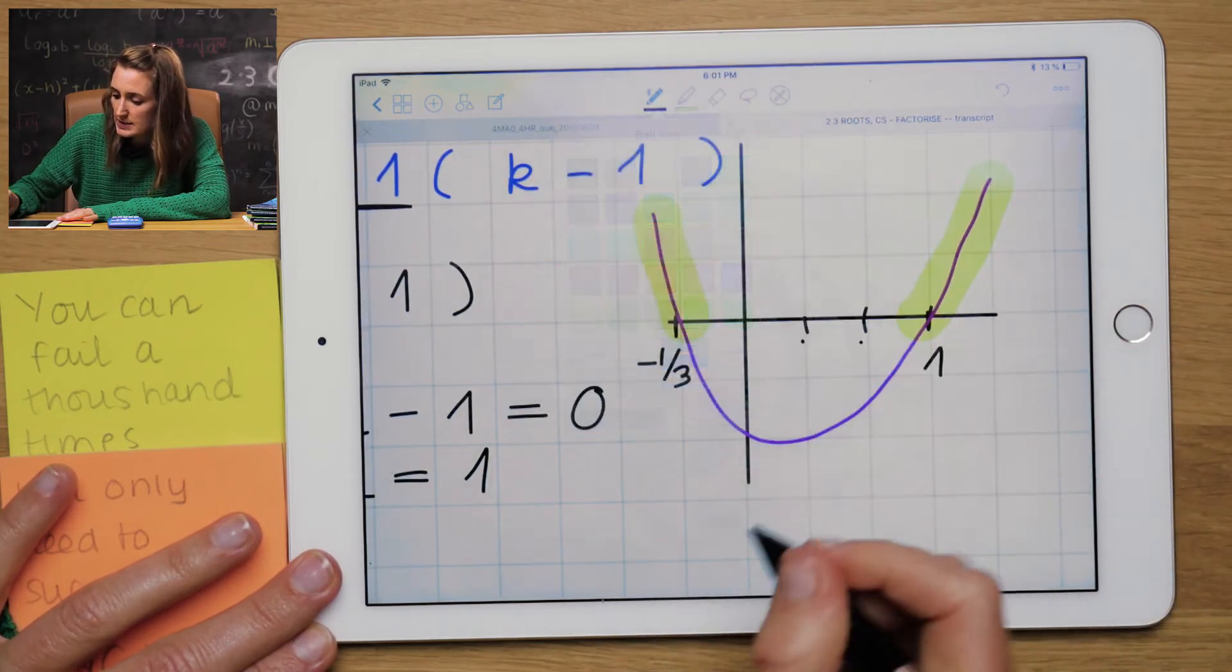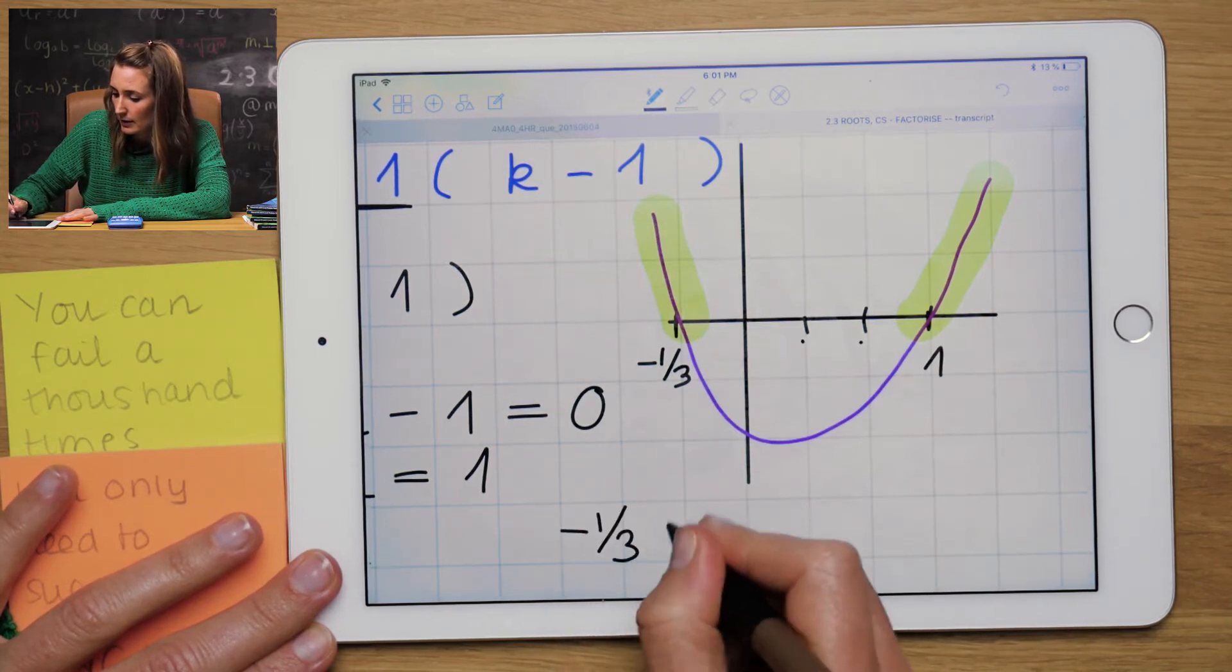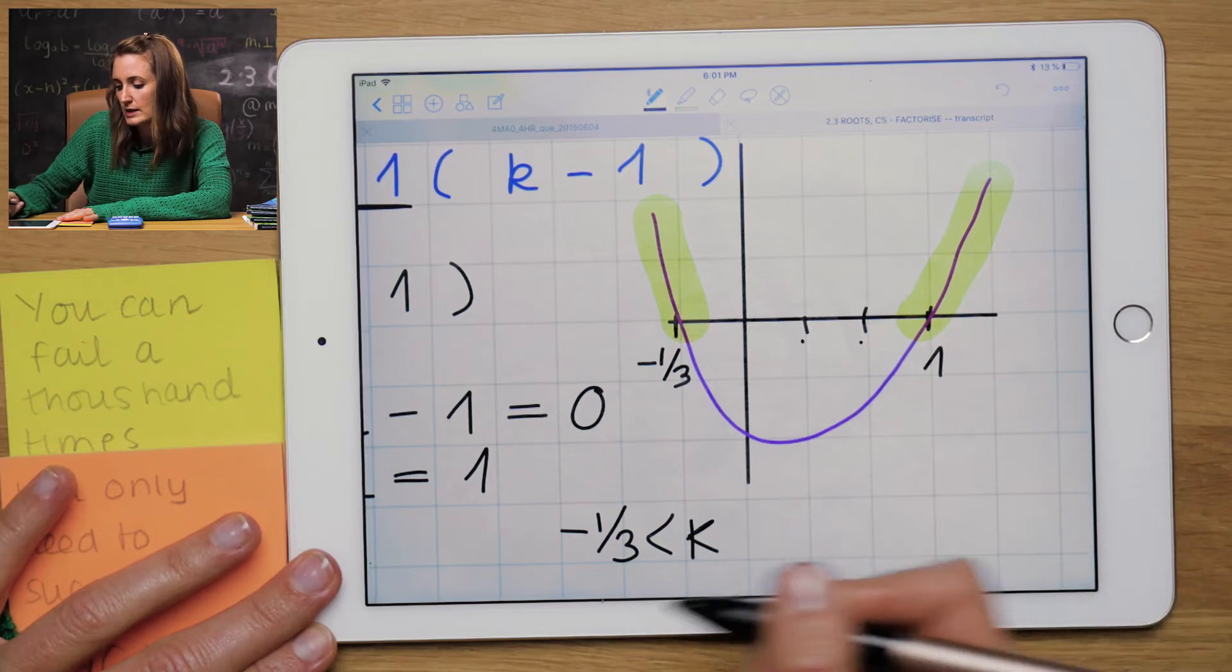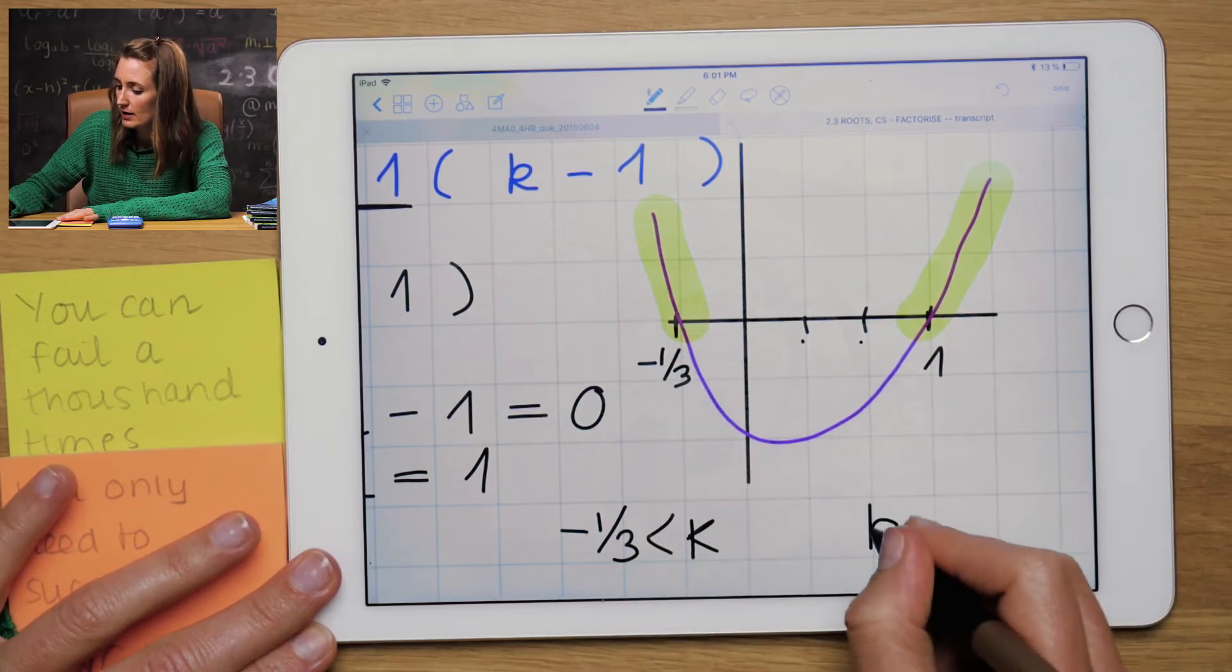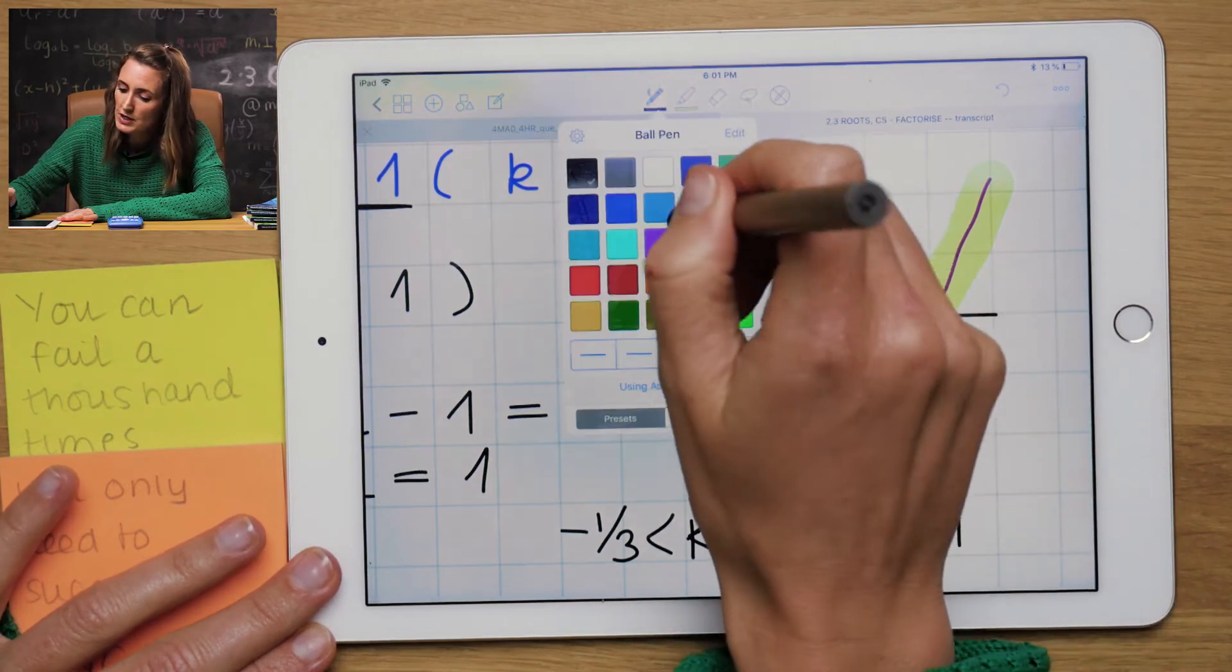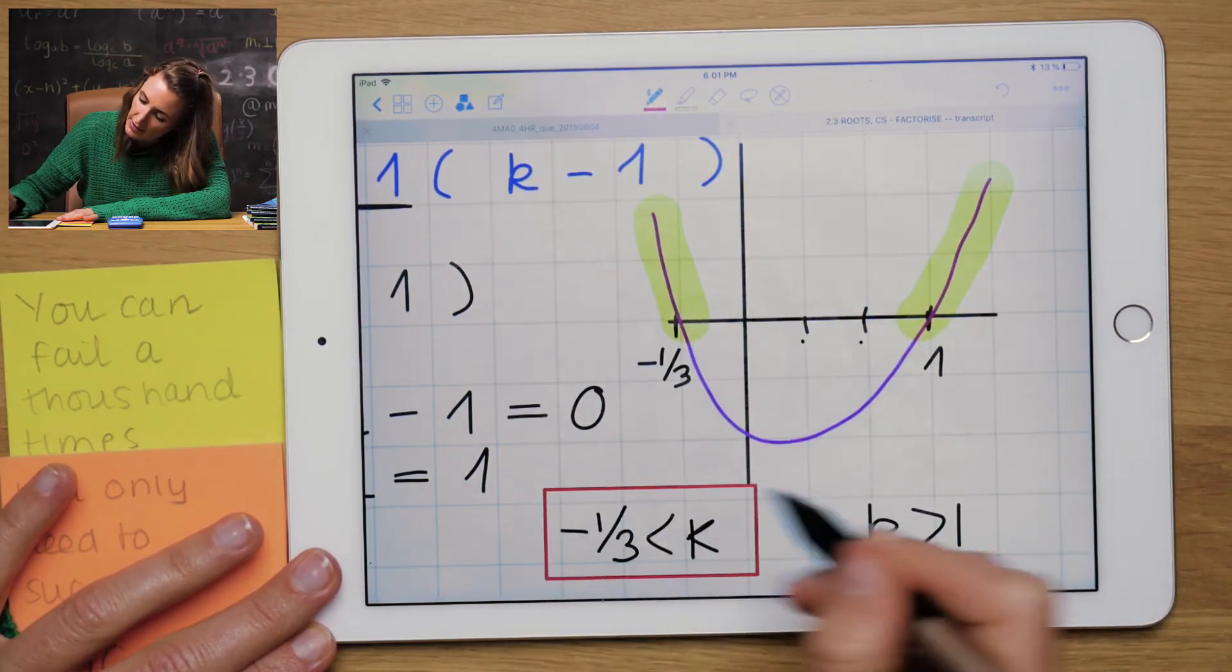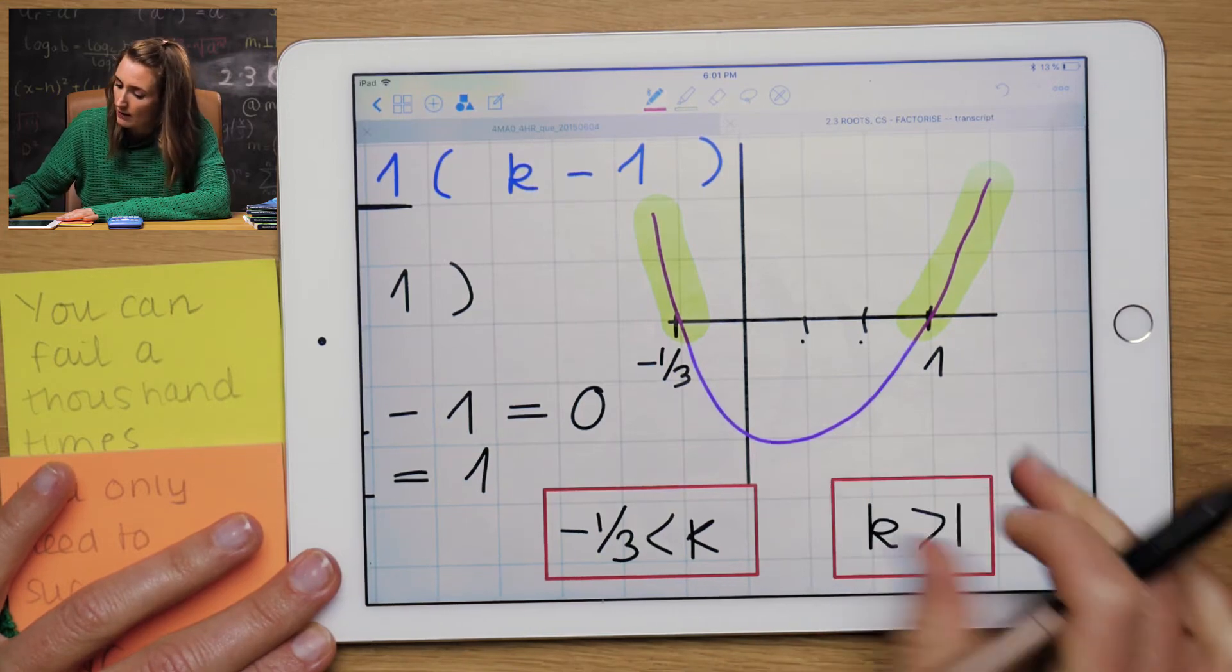And I had it bigger than zero. So remember, I want to shade above, above this x-axis. So that will be in two places here and here. If I shade in two places, I get two answers. k is less than or going to the left for minus a third. And k is bigger than one. So if you shade in two places, you get two answers. And that's that question. I'm finished.